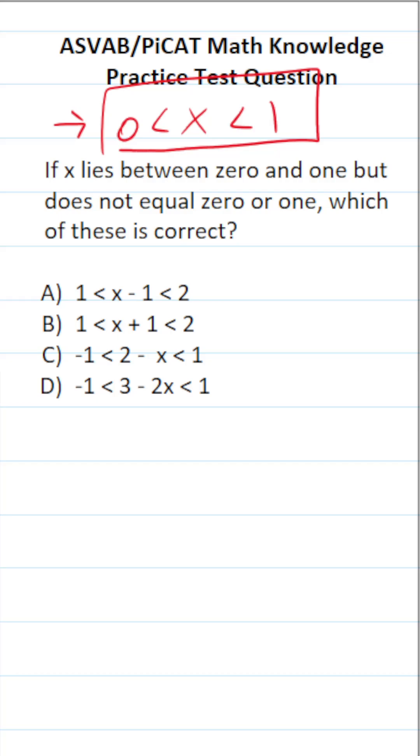Let's start with A. A says 1 is less than x minus 1, which is less than 2. To solve this inequality, we have to add 1 to both sides of the inequality. In doing so, this crosses out, leaving us with x here. 1 plus 1 is 2. 2 plus 1 is 3. This says x is between 2 and 3, so it is not correct.